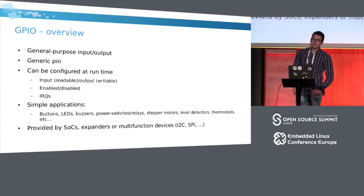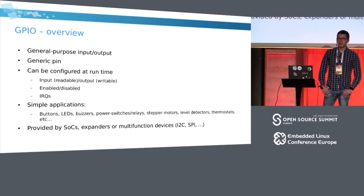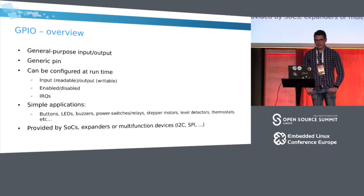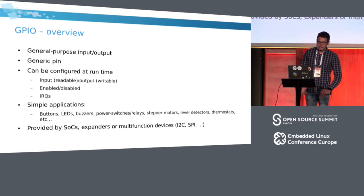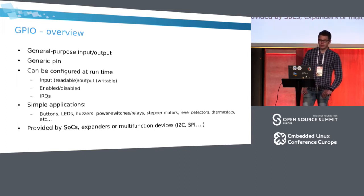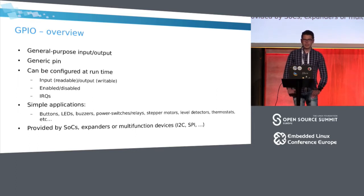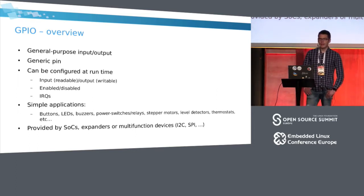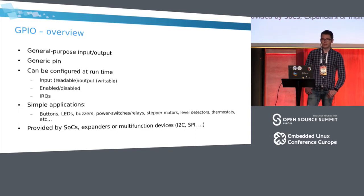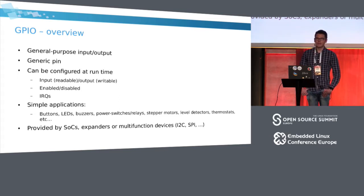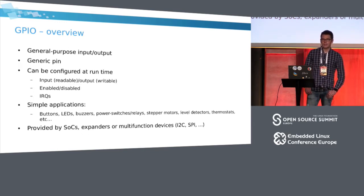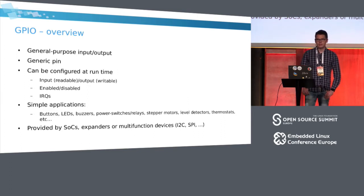GPIO stands for General Purpose Input-Output. This is a generic pin with no predefined function, and this can be configured at runtime. We can enable and disable it, set the so-called direction — which is a mode in which the GPIO works — either output, where we actively drive the line, or input, where we read the values. An extension of the input mode is that we can make a GPIO a source of interrupts, if the hardware allows it, so we can be notified about the changing state.